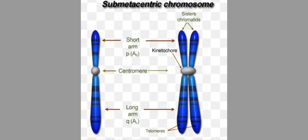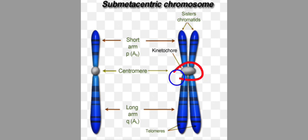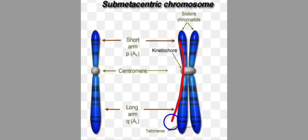Now let's look at chromosome structure. A chromosome consists of thread-like structures called chromatids. In the diagram, this thread-like structure is the chromatid. We also find a spherical zone called the centromere. The centromere is basically the joining point where two chromatids are joined together.